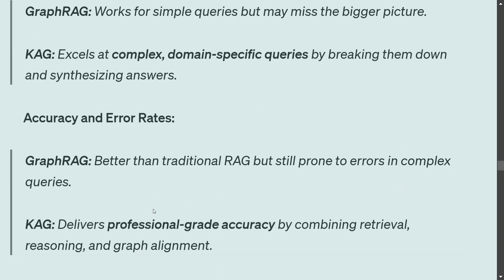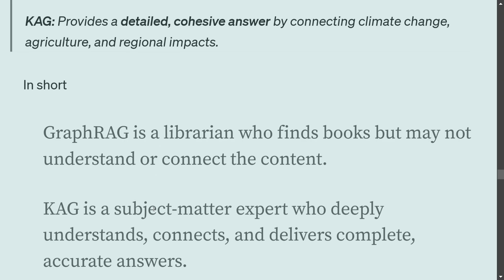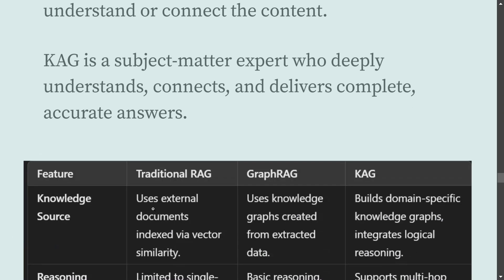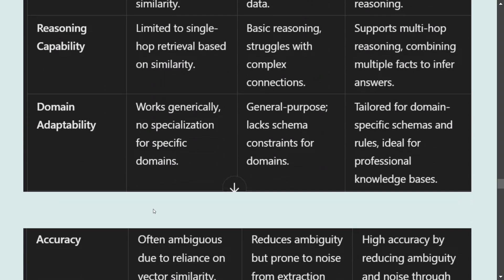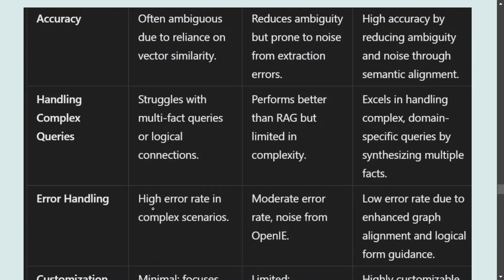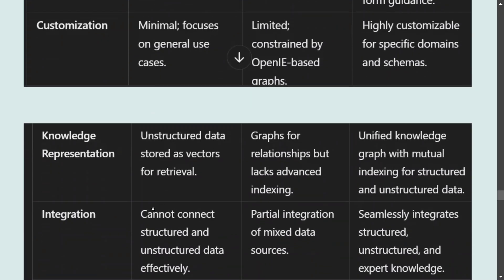In my direct comparison between RAG and graph RAG on a small dataset, graph RAG was also struggling to give answers on complex queries. Regarding accuracy, graph RAG is better than traditional RAG but still has certain errors; CAG, by far, has the least number of errors as mentioned by its creators. Graph RAG is like a librarian who finds books but may not understand and connect the content — CAG is a subject matter expert who deeply understands everything.